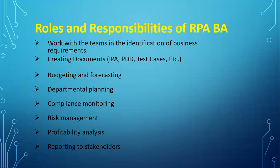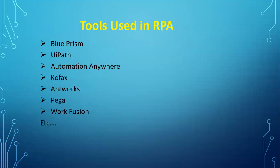RPA is not something that thinks like a human — it simply mimics human actions. Most of you know the tools available in RPA: UiPath, Automation Anywhere, Kofax, Antworks, Pega, WorkFusion, Softmotive, and many more. A business analyst should always be open to learning different tools, technologies, and domains like healthcare, finance, HR, banking, and insurance, as well as the limitations of each tool.